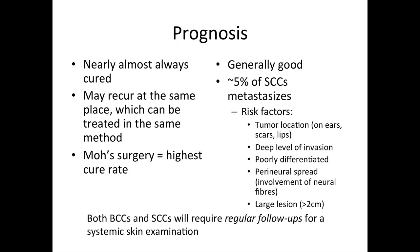Overall, the prognosis of BCCs and SCCs are quite good. Nearly all BCCs will be cured. Those cases that recur in the same place can be treated again with the same or other methods. Around 5% of SCCs will metastasize. Risk factors for metastasis include the location of the SCC, such as on the lips, ears, and previous scars, a deep level of invasion or poor differentiation on histology, involvement of neurofibers, or if the lesion is large to begin with. All patients with confirmed BCC and SCCs should have regular follow-ups for a head-to-toe skin examination to rule out growth of more lesions.